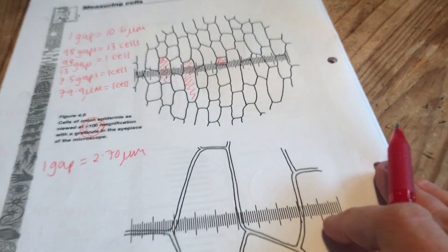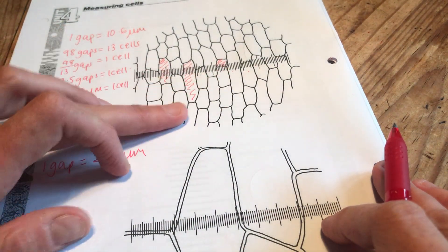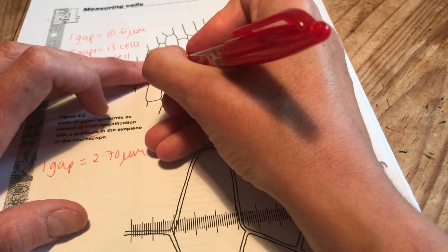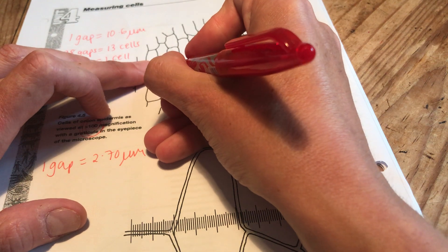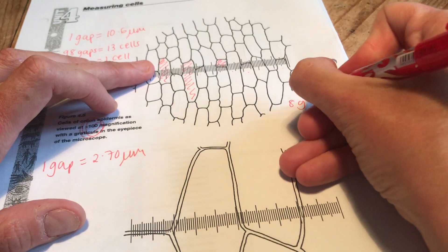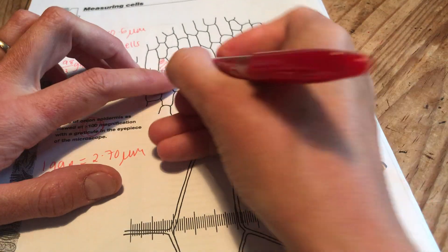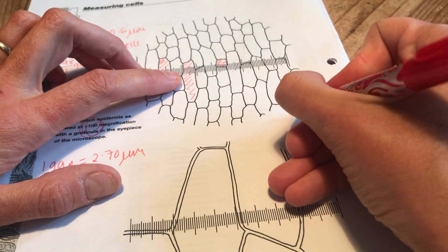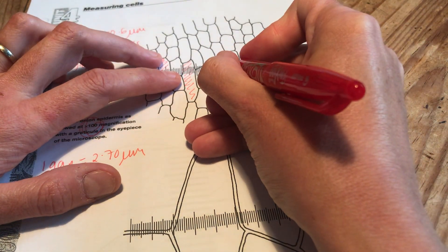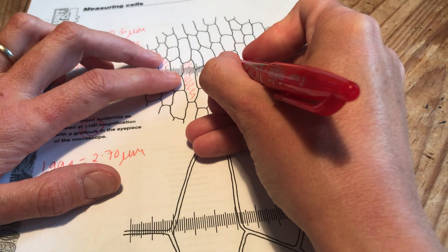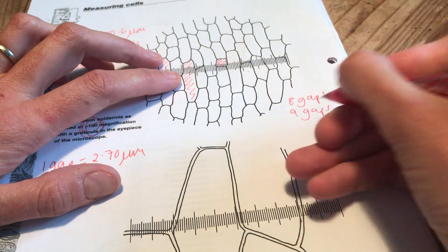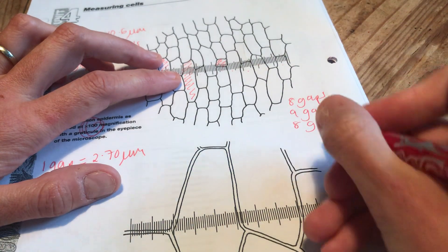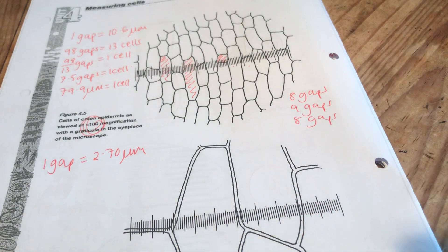If I was to do it the other method, let's say I randomly pick a couple and do a mean of that. I might say, right, this cell here is worth 5, 6, 7, 8 gaps. This cell here that I've picked is worth 5, 6, 7, 8, 9 gaps. This cell that I've picked here is worth 1, 2, 3, 4, 5, 6, 7, 8 and a bit gaps. Very accurate. So the mean of those numbers is going to be just over 8.